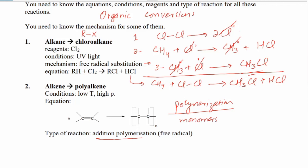This is a type of addition polymerization because only one type of unit is used and there is no release of any small molecule. It takes place at low temperature and high pressure. In this way polyethene is found from alkenes. I'll tell you how we get PVC — polyvinyl chloride.